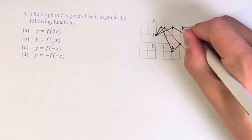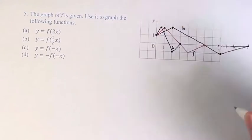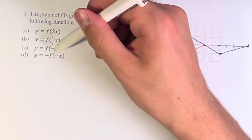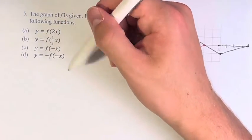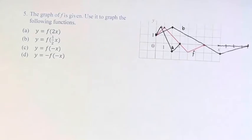This is b. Next we have c, f of negative x. The negative sign is within the function. So this is reflecting about the y-axis.